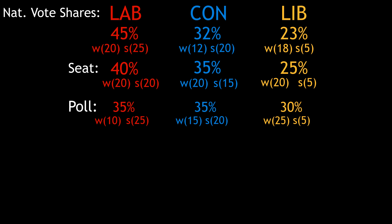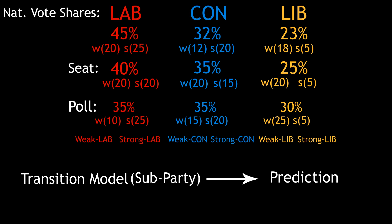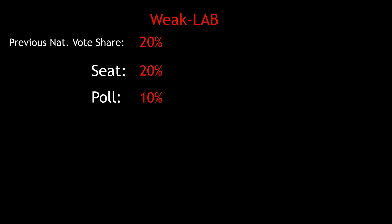We can do the same for the Conservatives and the Lib Dems. What we've done now is split each party into two sub-parties: a strong party and a weak party. We then apply the transition model, but rather than applying it just to each party, we apply it to the sub-parties — strong Labour, weak Labour, etc. — to predict the outcomes in each seat. We then recombine the strong and weak votes in each seat to work out which party has won the seat. To illustrate, applying the transition model to weak Labour: the gain for weak Labour comes out at 0, as the weak Labour voters' share is predicted to decrease. Since the vote share decreases, the number of weak voters in the seat is just scaled, giving a weak voter share of 10%.